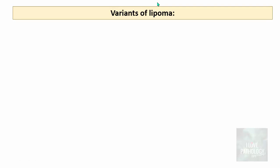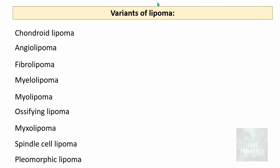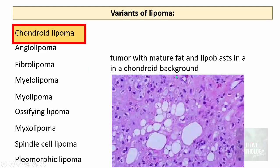There are variants of lipoma depending upon the component present within a given lipoma. Chondroid lipoma is a tumor with mature fat and lipoblasts in a chondroid or cartilaginous background. Angiolipoma is composed of mature fat with numerous small blood vessels; some of these blood vessels contain fibrin thrombi.